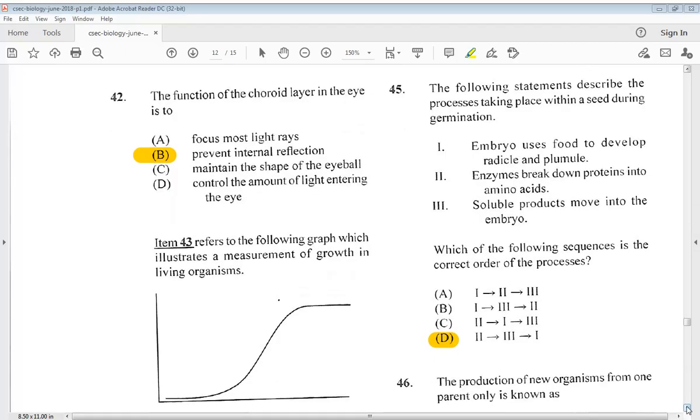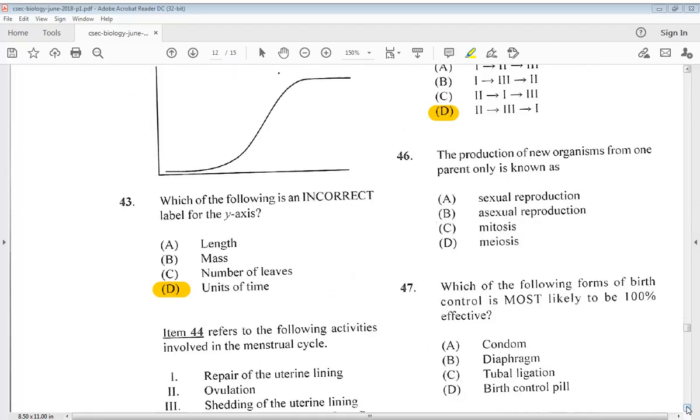Let's go to number 46. The production of new organisms from one parent only is known as? We know that is known as B, asexual reproduction. Question 47 says which of the following forms of birth control is most likely to be 100% effective? A. Condom. B. Diaphragm. C. Tubal ligation. D. Birth control pill. So we know it is C, tubal ligation.